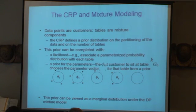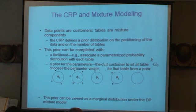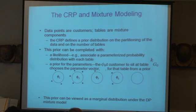As n gets larger and larger, you get more and more parameters, and in the limit you get an infinite number. That picture of the Dirichlet process is the infinite bag you could eventually use if you had an infinite amount of data.